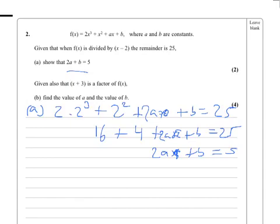Now part B, find the value of... right, we're told that x minus 3 gives no remainder, so put x equal to minus 3.